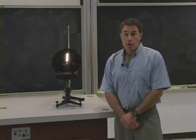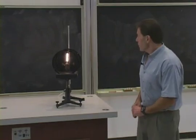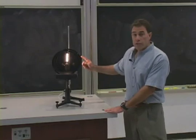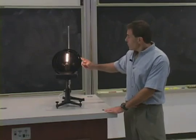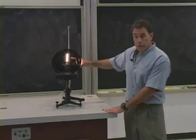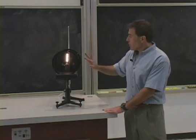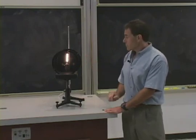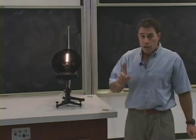Now let's take a look at an effect we call polarization. We have three different pieces of apparatus to show. This one is a single filament light bulb. The next two pieces are just these two polaroids that we have in front of the light bulb.